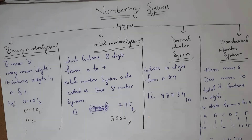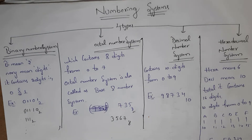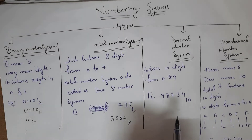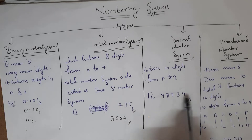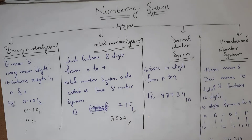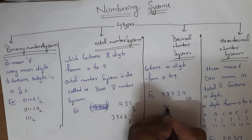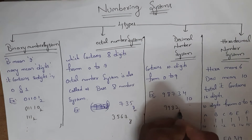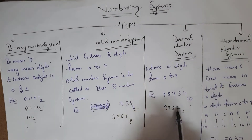The meaning of decimal is 10, so it contains 10 digits from 0 to 9. We also call this the base-10 number system. For example, 9982 base 10 — it contains numbers from 0 to 9 and is represented with base 10.